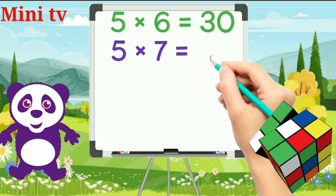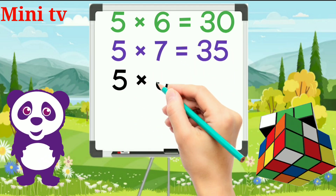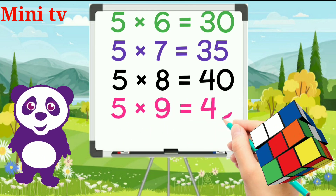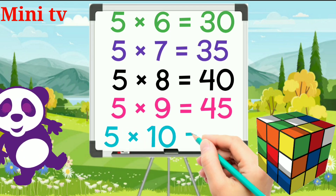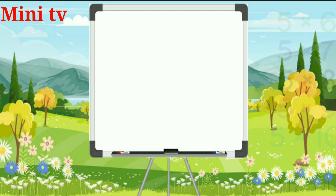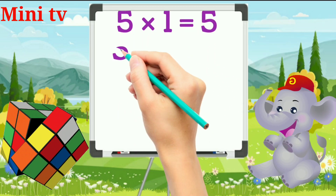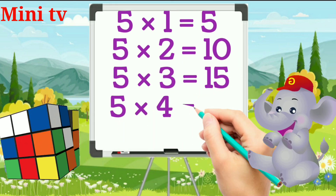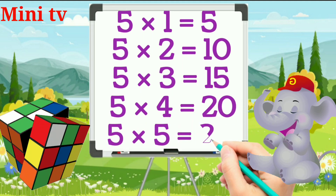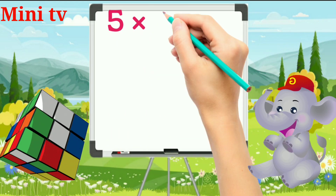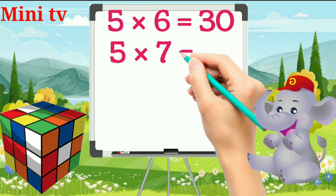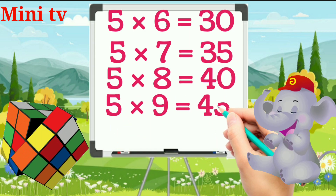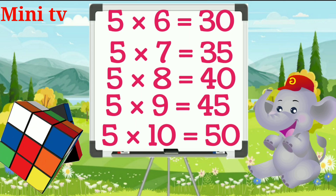5 sevens are 35. 5 eights are 40. 5 nines are 45. 5 tens are 50.